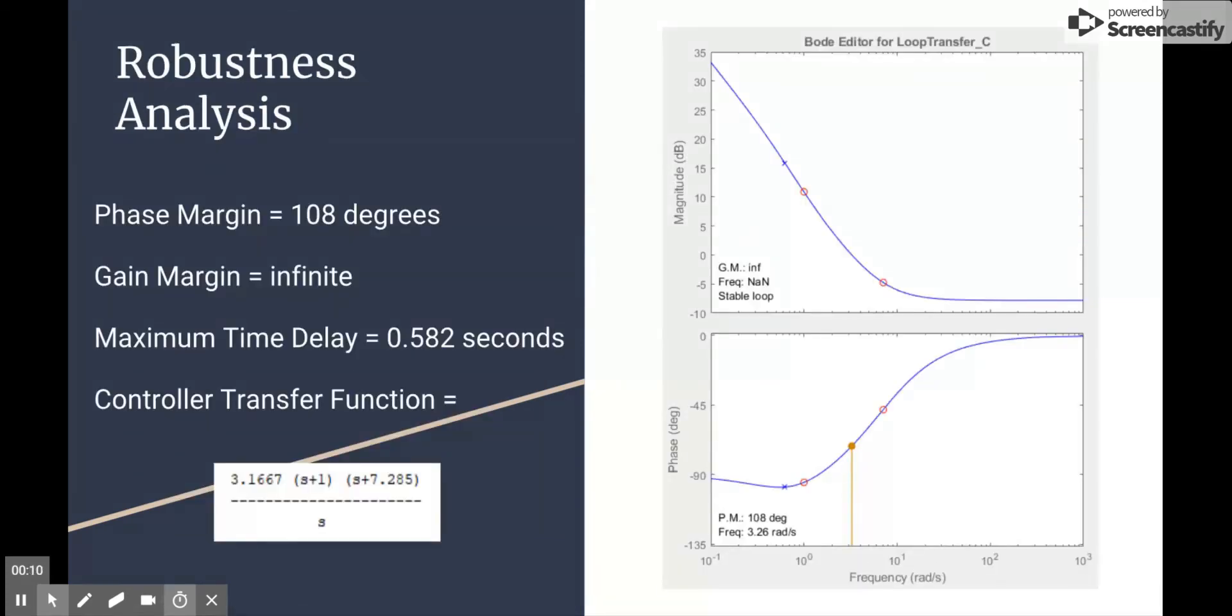In terms of the robustness analysis for our feedback control system, we had a phase margin of 108 degrees as you can see on the Bode plot to the right and an infinite gain margin. Based on these values, we were able to calculate a maximum time delay of about 0.582 seconds, which seemed like a reasonable amount of delay for our system to be able to accept and still function as intended. The transfer function for this is shown in the bottom and models the behavior of our controller. As you can see, we have a gain of 3.167, an integrator term, a zero at negative 1 and a zero at negative 7.29.